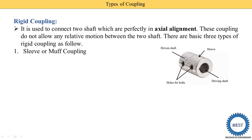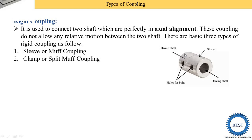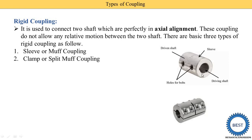The second type is a clamp or split muff coupling. The muff coupling is divided into two parts, and that is why it is called the split muff coupling. Here you see the diagram — this coupling is divided into two parts.